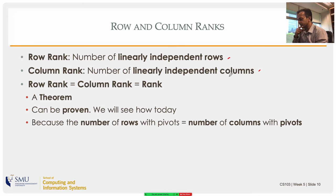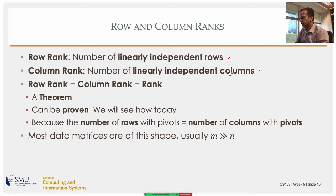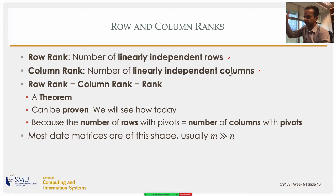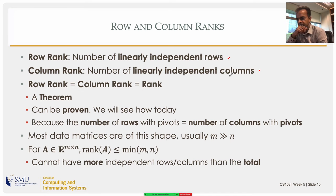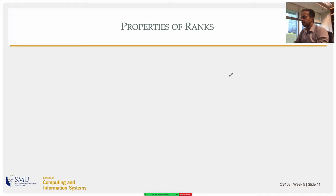In computer science and data science, our data matrices tend to be tall — more rows than columns — because you have measurements along a few features or variables with more and more measurements coming in. The columns tend to be linearly independent because they are real measurements with no reason for linear dependency. The rank cannot exceed the total number of rows or columns.